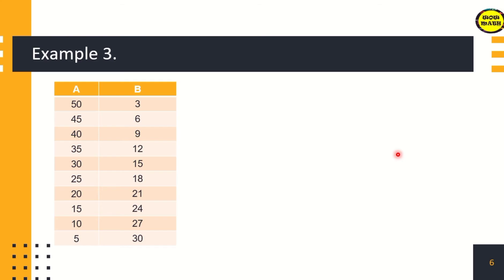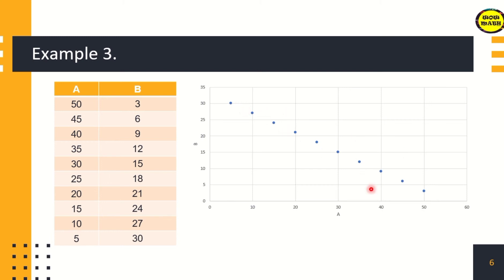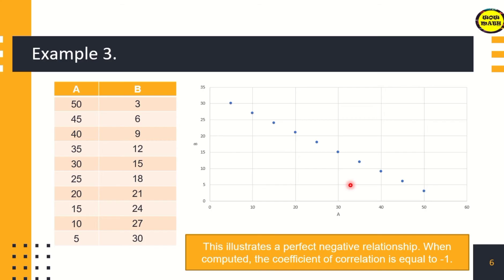Given column A and B again, if you try to construct a scatter plot using Microsoft Excel, this is what we will see. This illustrates a perfect negative relationship. When computed, the coefficient of correlation is equal to negative 1. When the direction of the dots is like this, that is a negative correlation.